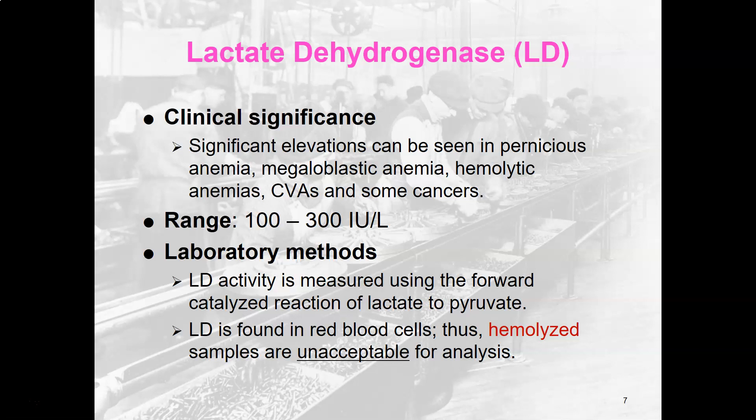Significant elevation of LDH can be seen in pernicious anemia, megaloblastic anemia, hemolytic anemias, cardiovascular accidents, strokes, and some cancers. The reference range is 100 to 300 international units per liter. LDH activity is usually measured using the forward-catalyzed reaction of lactate to pyruvate, measuring NAD or NADH production. Since LDH is found in red cells, hemolyzed samples are unacceptable for analysis as they yield falsely elevated results. That concludes this review of CK and LDH.